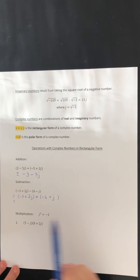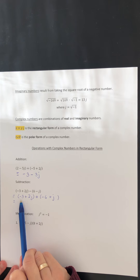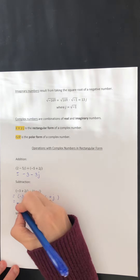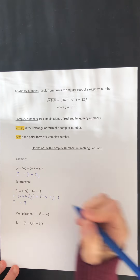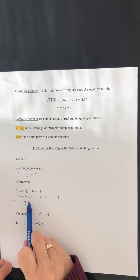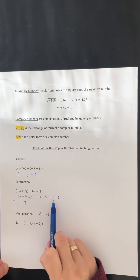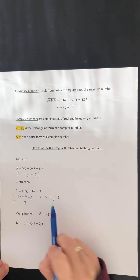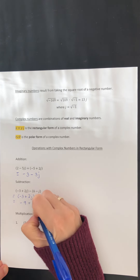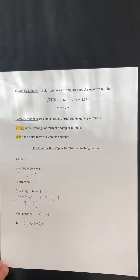Starting with the real numbers, we have negative 3 and negative 6. Adding those gives us negative 9. Now consider the imaginary parts: here we have positive 2j and we are adding j — in other words, adding one more j — so this gives us positive 3j. Our answer is negative 9 plus 3j.